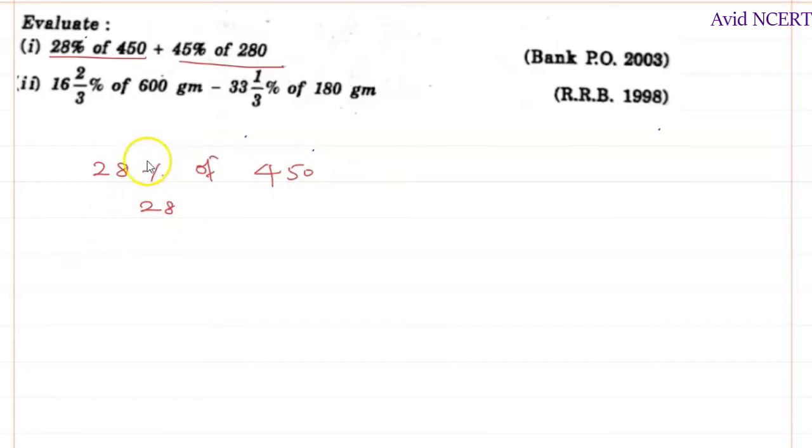28 - whenever they say percent, it means 28 by 100, of or times, multiplied by 450. Try to simplify this and get the answer. Zero zero gets cancelled always.